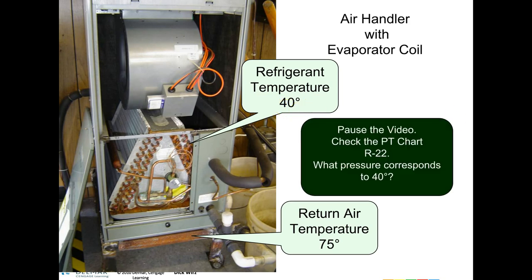Pause the video. Pull out a PT chart and check R-22. Figure out what pressure corresponds to 40 degrees Fahrenheit, and what is the TD on this evaporator coil.